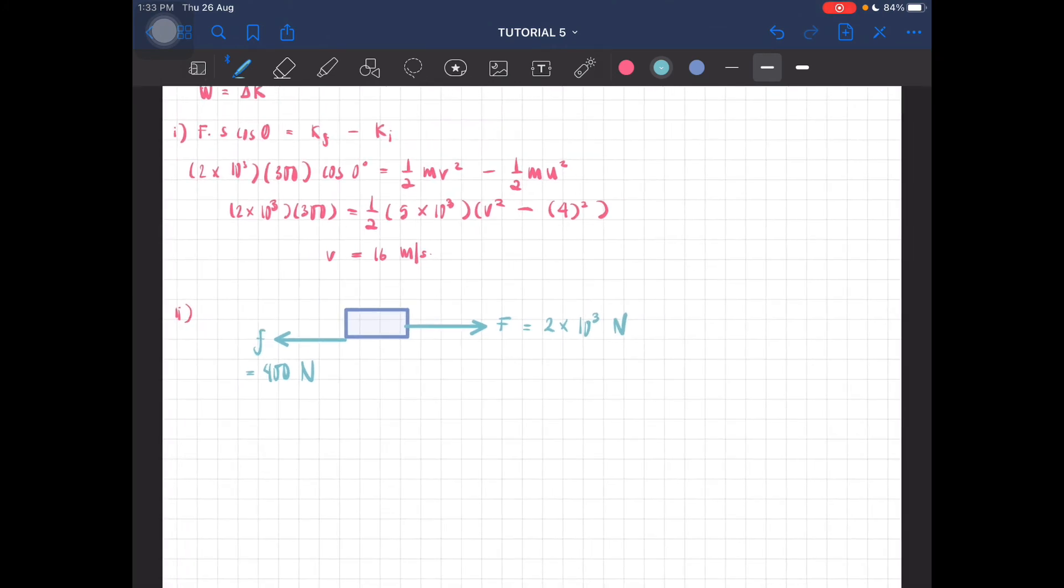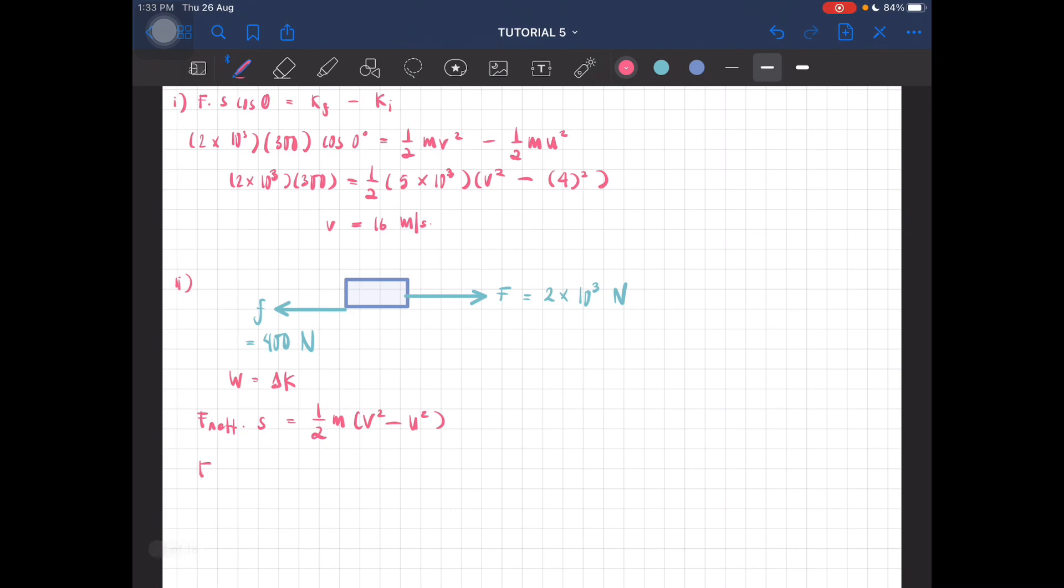Now we again use the work-kinetic energy theorem. However, there will be a change in the work done because there's an opposing force. The net work done is F_net times s times cos(θ) equals ½m(v² - u²). F_net is F minus f, so (F - f)s = ½m(v² - u²).